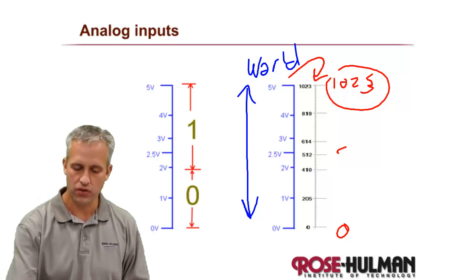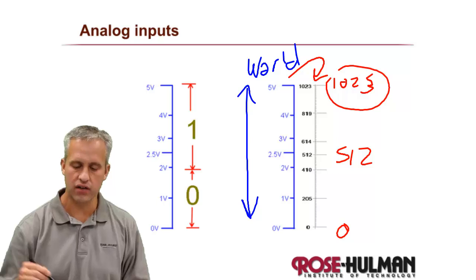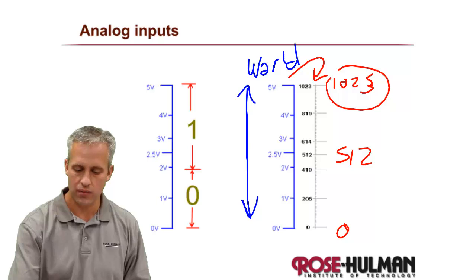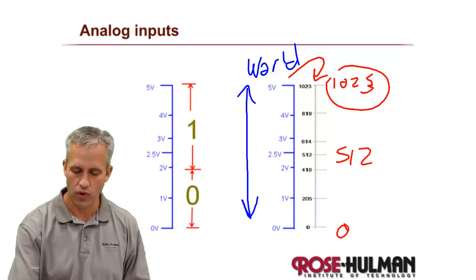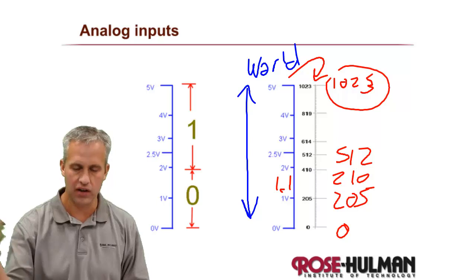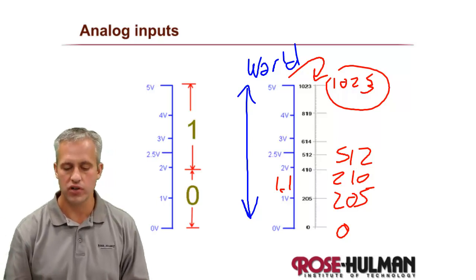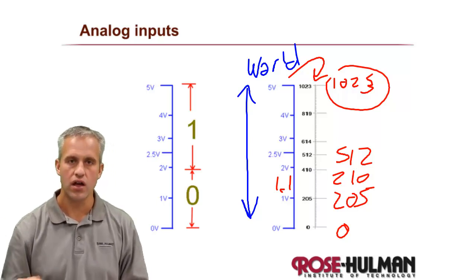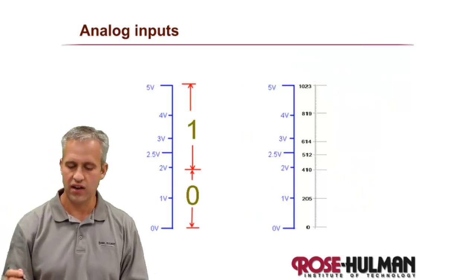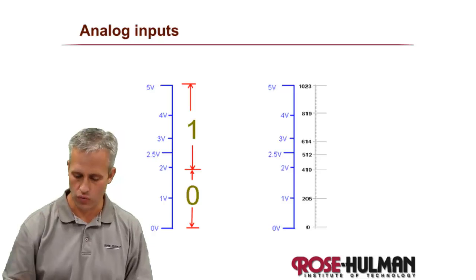If it's somewhere in the middle you'll get a reading of 512, and we'll talk about how you actually get these numbers. Depending on where it's at, here's an example with one volt. That's 205, and if it's 1.1 volts that would be like 210 or something. You can see it's a linear scale and you can see exactly what the voltage is between zero and five volts instead of just getting a simple zero or one.